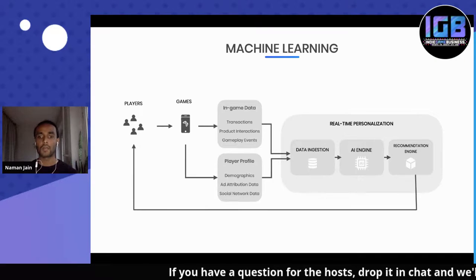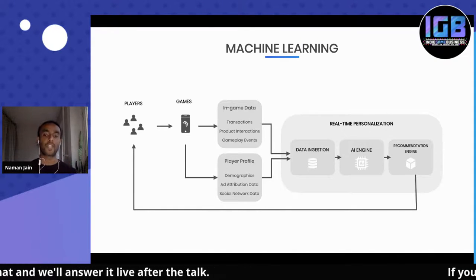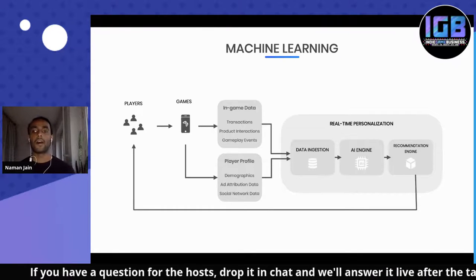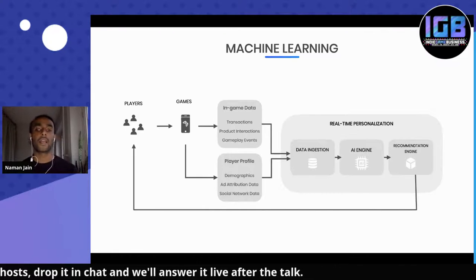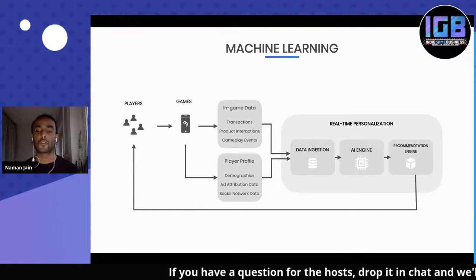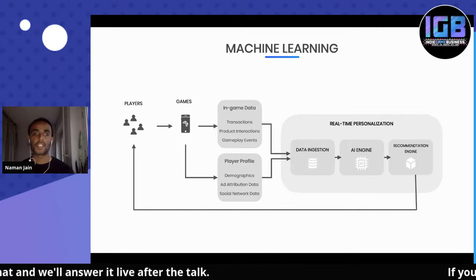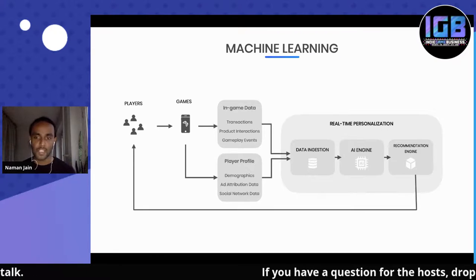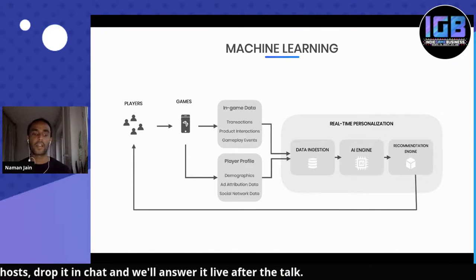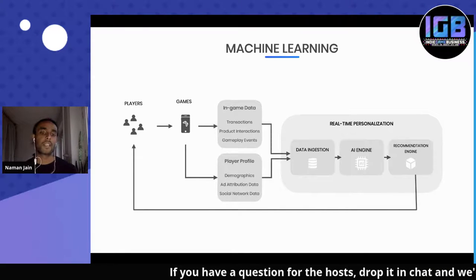Once you have in-game data and player profile data, you can ingest all of it and train AI algorithms to make predictive analysis. There are tools out there that can do this for you — you don't need experience in AI or predictive modeling. As long as you produce the data, they can take it and handle all the AI and personalization. The predictive models then make recommendations sent back to your players, such as which product offering to show, at what price, what push notifications to send, or what reward to give after a rewarded ad.